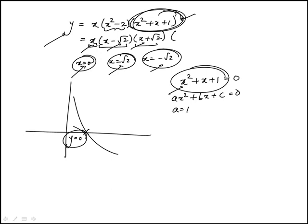I have a is 1, b is 1, c is 1. So we look at b squared minus 4ac, which is 1 squared minus 4, 1 times 1, or 1 minus 4 minus 3.